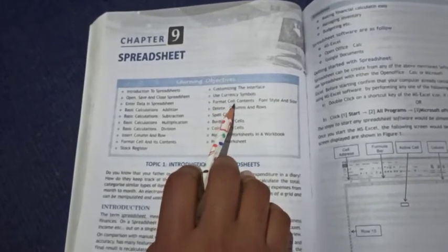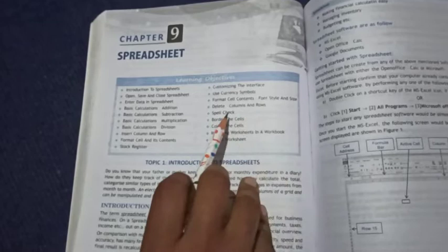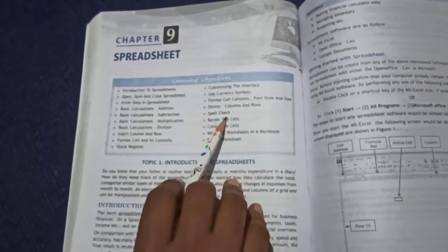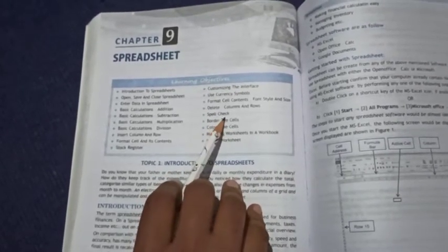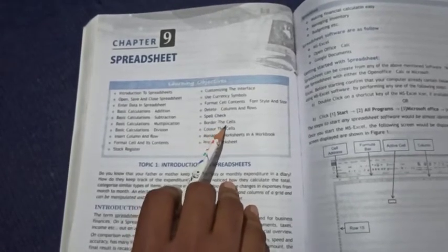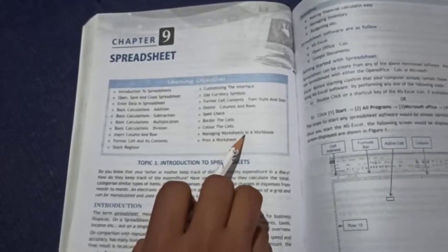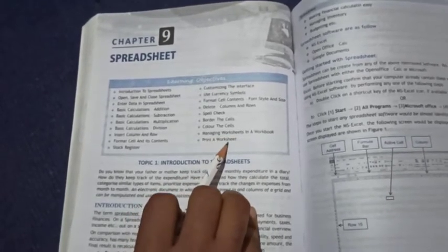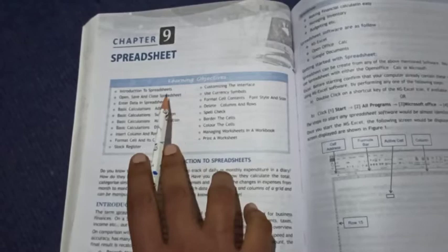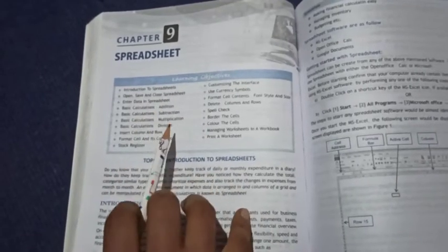Format cell content, font style and size, delete column and row, spell check, border the cells, color the cells, managing worksheets in a workbook, print a worksheet. All these topics we will learn in this spreadsheet chapter.